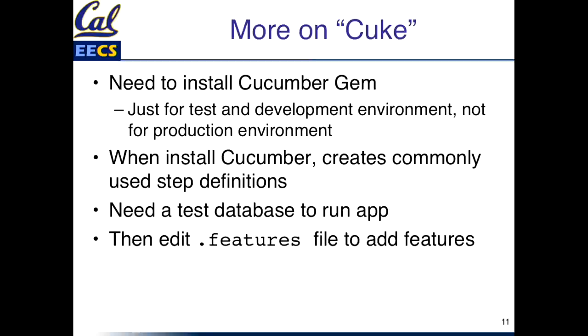To use this, as it says in the book, you need to install it like everything else — you install it as a cucumber gem. It's going to create for you, remember how Rails is so productive? It creates a bunch of things so you don't have to. It'll create some commonly used step definitions when you install it. You need a test database to work with, and then you edit the .feature files to add features.